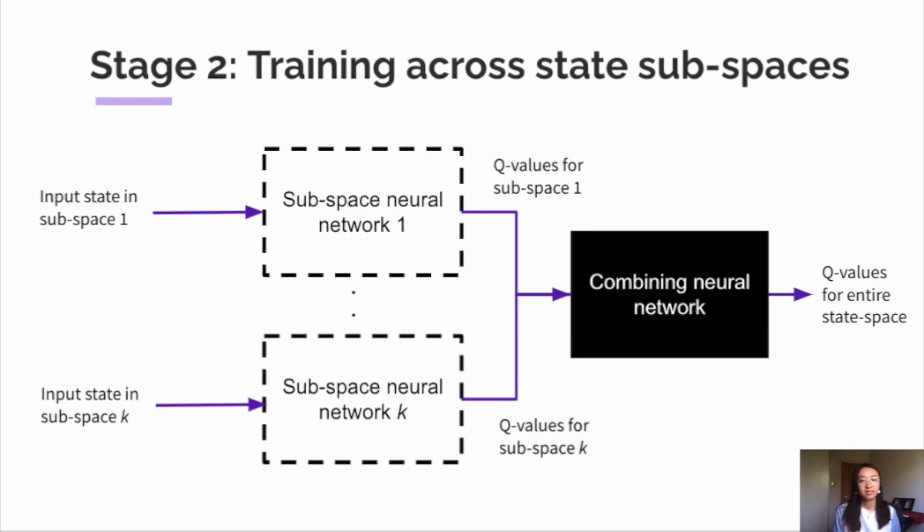So how does SSDRL actually solve the two problems we introduced in our motivation? Firstly, SSDRL is able to speed up learning a lot as we train on smaller neural networks which operate in a lower dimension. This helps us alleviate the effects of the state space explosion problem.